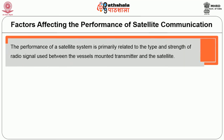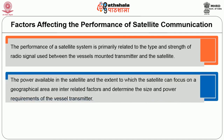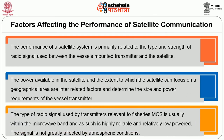The performance of a satellite communication system is primarily related to the type and strength of the radio signals used between the vessel-mounted transmitter and the satellite. The power available in the satellite and the extent to which the satellite can focus on a geographical area are interrelated factors that determine the size and power requirement of the vessel transmitter. The type of radio signal used by transmitters relevant to fisheries MCS is usually within the microwave band, which is highly reliable, relatively low powered, and not greatly affected by atmospheric conditions.